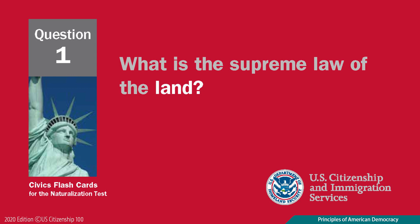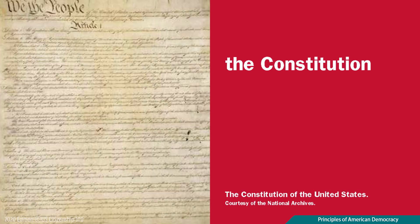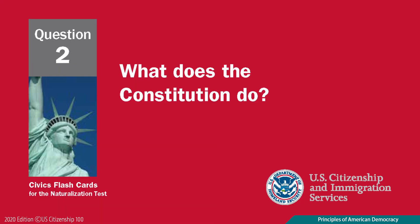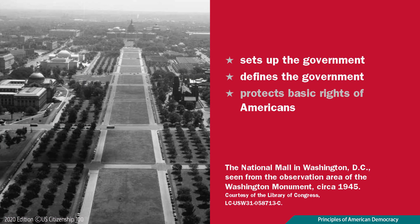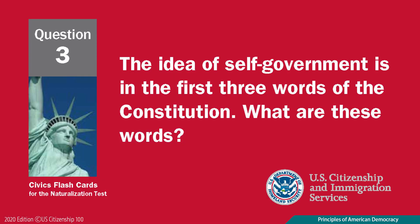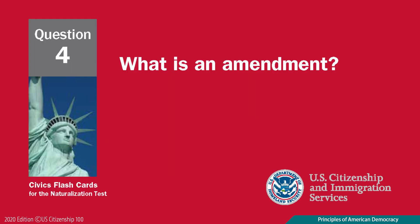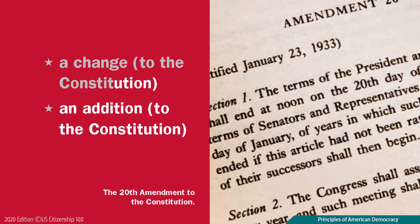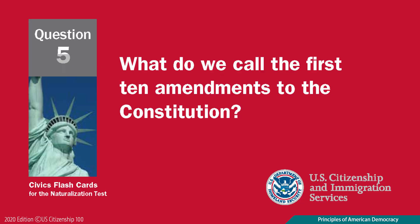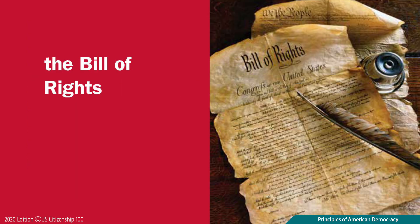What is the supreme law of the land? The Constitution. What does the Constitution do? Protects basic rights of Americans. The idea of self-government is in the first three words of the Constitution. What are these words? We the people. What is an amendment? A change to the Constitution. What do we call the first ten amendments to the Constitution? The Bill of Rights.